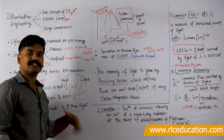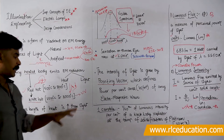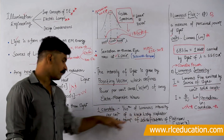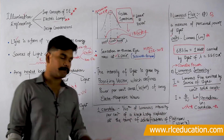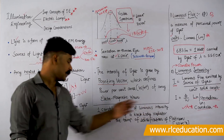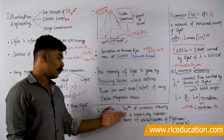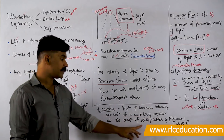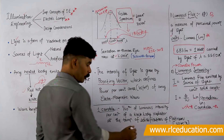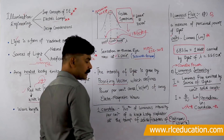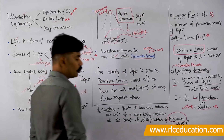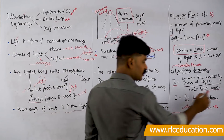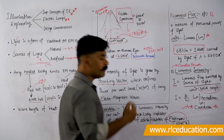Candela is defined as 1/60th of the luminous intensity per centimeter squared of a blackbody radiator at the temperature of solidification of platinum, which is 2045 degrees Kelvin. Next we will look at what a solid angle is, what a plane angle is, and then continue further. Thanks for watching this video.